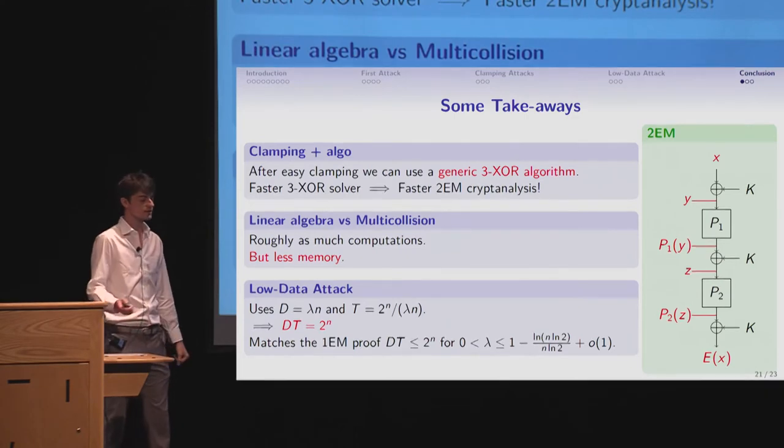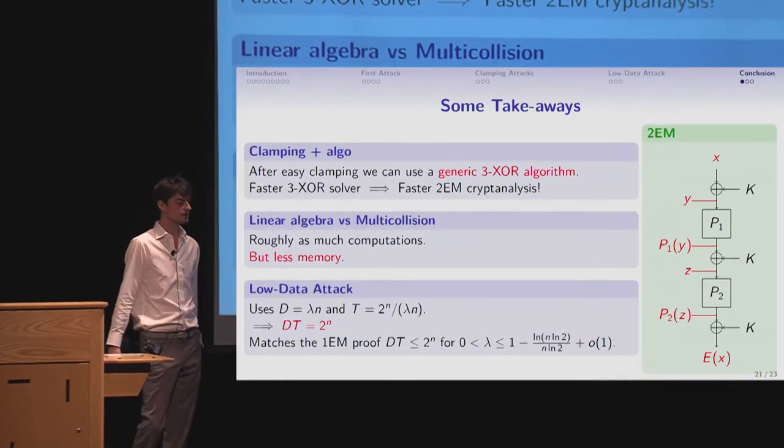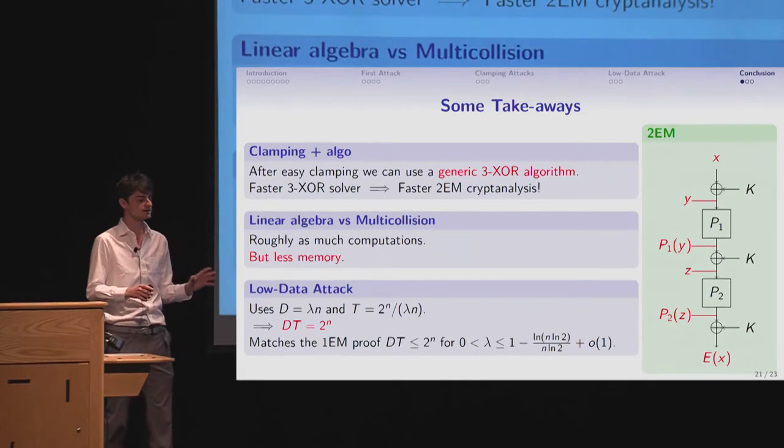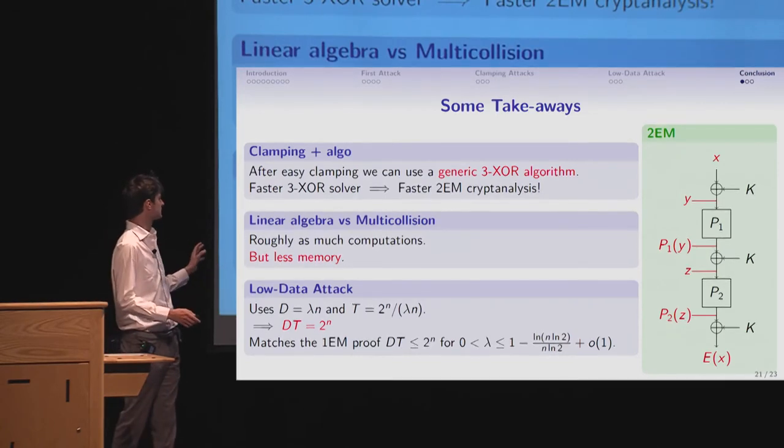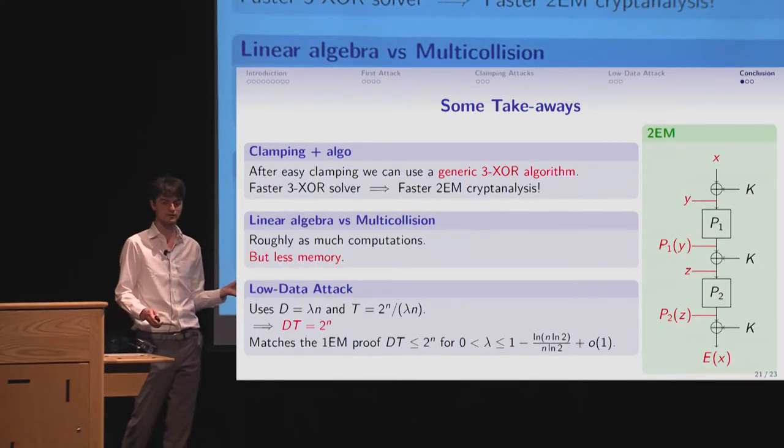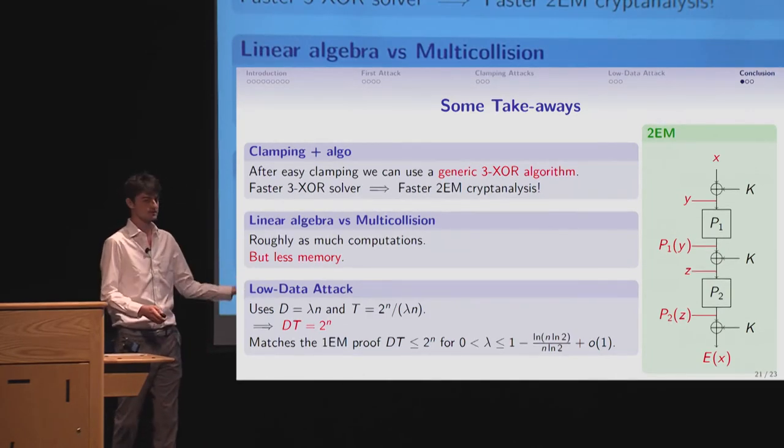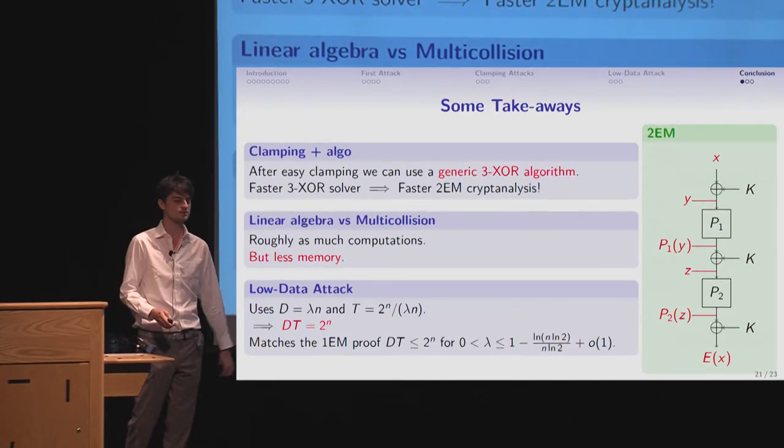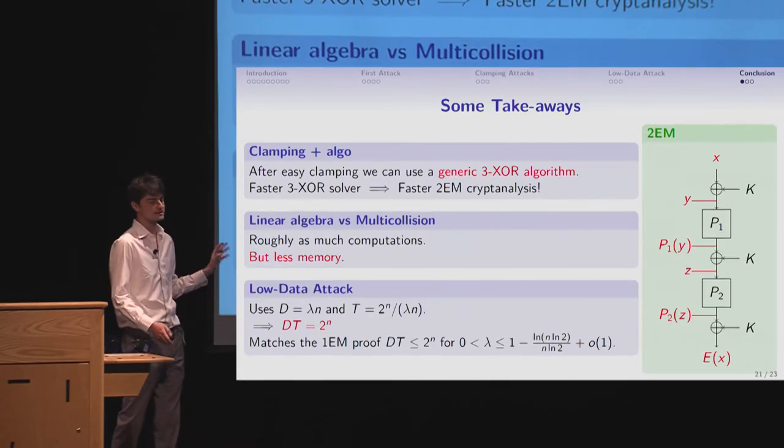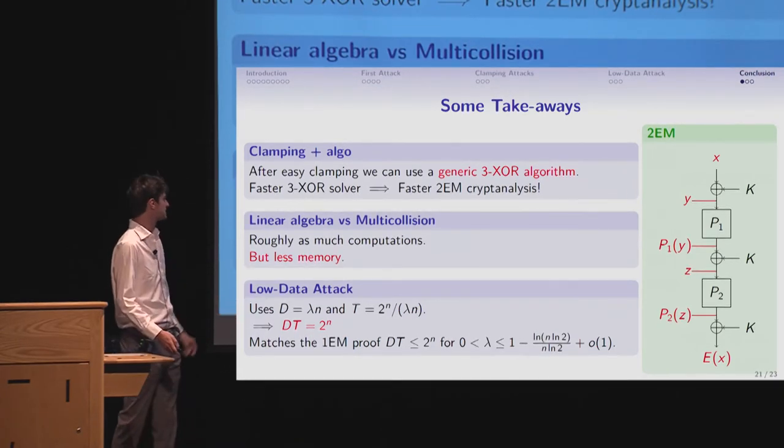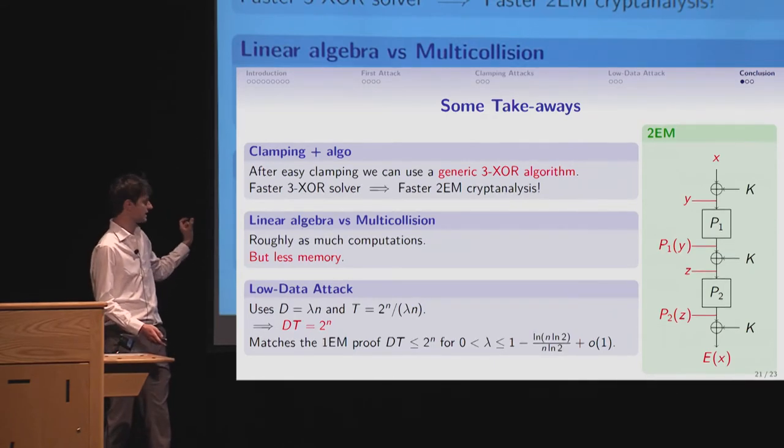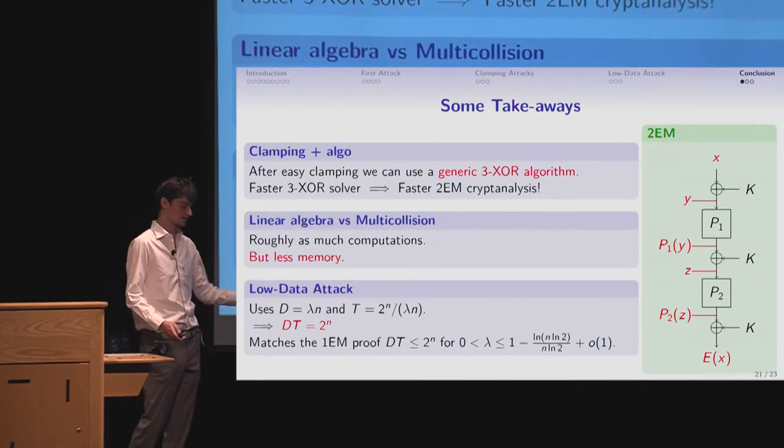Another remark. If you look at the low data trade-off, you have that this D times T is really equal to 2 to the n, which is the same trade-off you find for the proof of the one round Even-Mansour, which means that since obviously this proof applies to the two round one, this means that this attack is information theoretically efficient only for this small data range, the fraction of n.